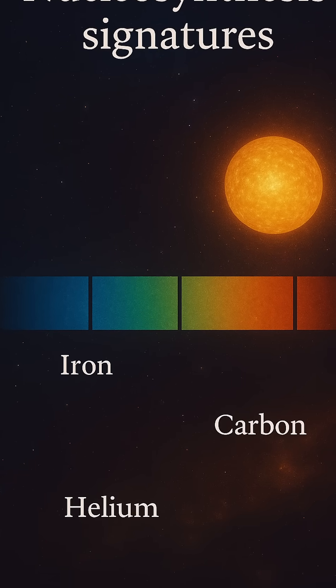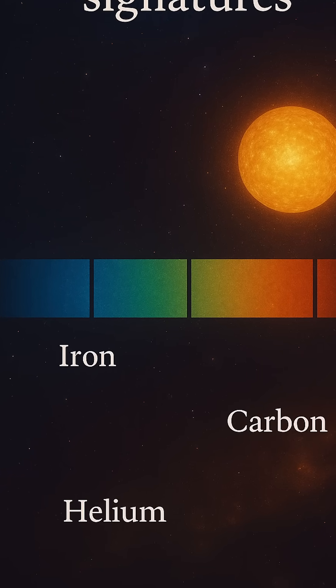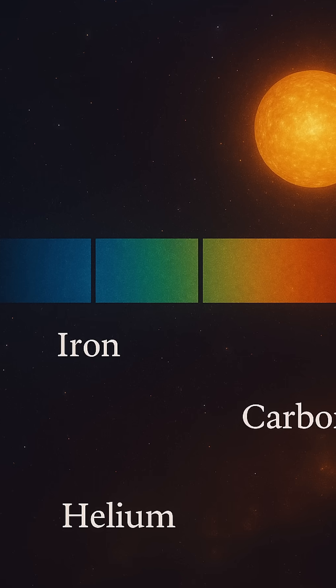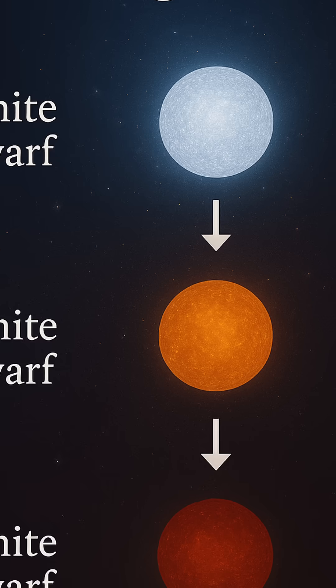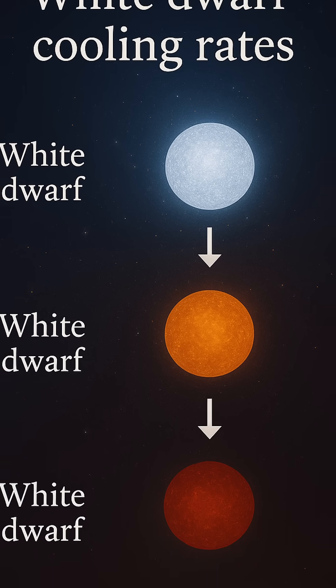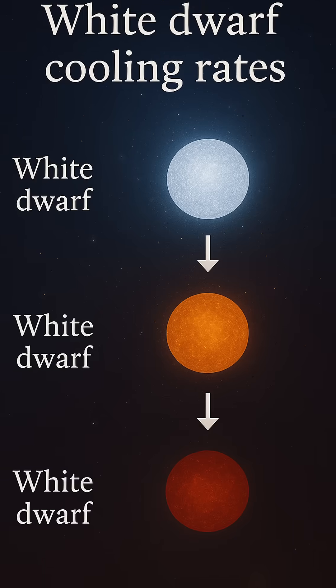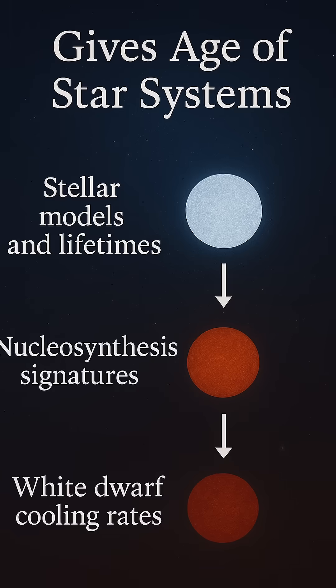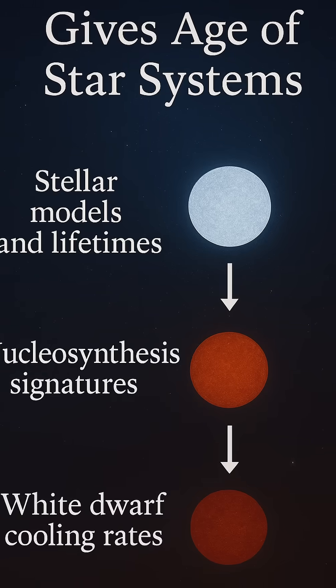Massive stars burn bright and die young, often exploding in spectacular supernovae, while smaller stars like our sun lead longer, steadier lives. By observing where a star sits on the Hertzsprung-Russell diagram, a chart of brightness versus temperature, astronomers can compare it to theoretical models and estimate its age with surprising accuracy.